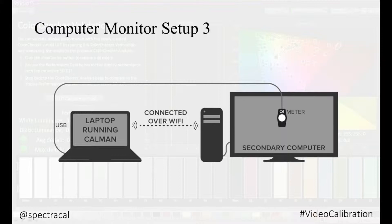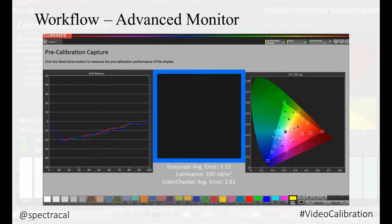For all scenarios, the pattern source — which is CalMAN Client 3 — generates the patterns on the screen. The meter reads the luminance and chromaticity values for the display's performance for that particular pattern. CalMAN software then uses the meter reading data to create correction data unique to this display's color performance, in the form of a 1D LUT and ICC profile, which gets stored in the operating system for the remote computer. Here is a screenshot of one of the workflows used for calibrating laptops and monitors connected to desktop computers — this is the monitor advanced workflow within CalMAN.